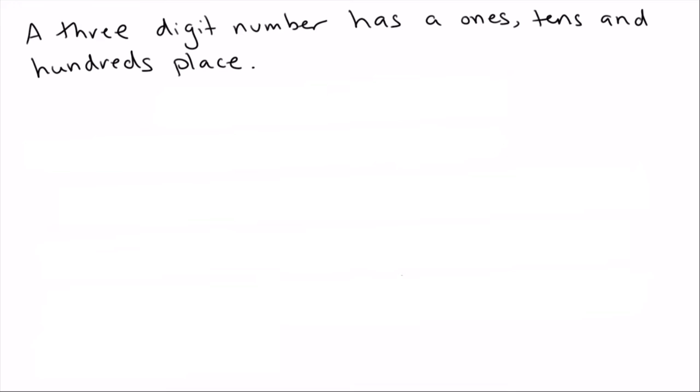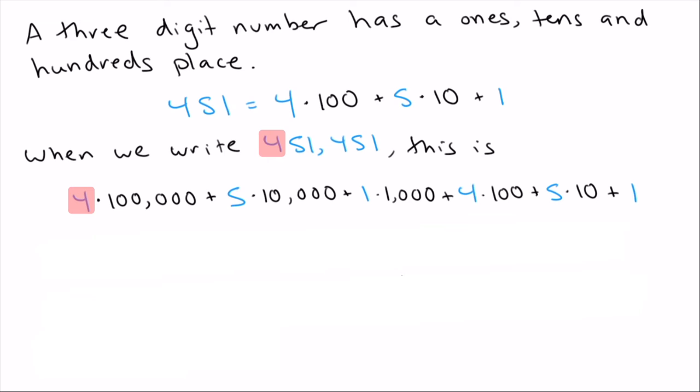Any three digit number in the world has a ones place, a tens place, and a hundreds place. That's what it means to be a three digit number. For example, 451 is four in the hundreds place, five in the tens place, one in the ones place. The way we can express that mathematically is saying that means this number is four times 100 plus five times 10 plus one. If you want to double check that, you can make sure it adds up, but that's what it means to say something's in the hundreds place or the tens place or the ones place. So what's going on when we put 451 twice, when we turn it into 451,451. Let's do the same thing.